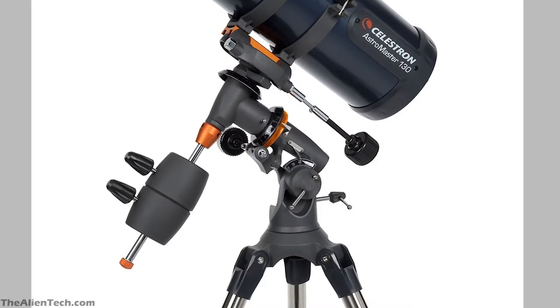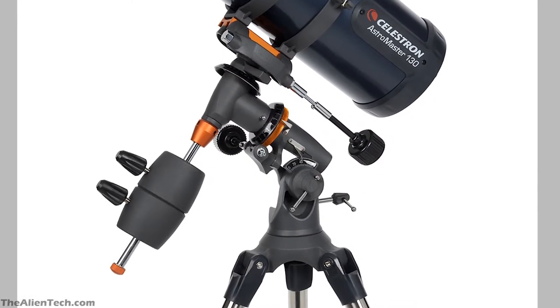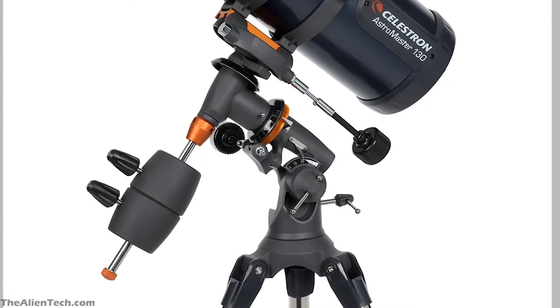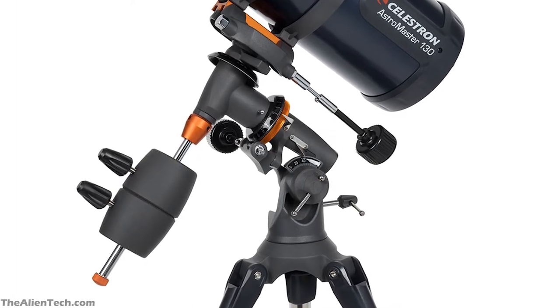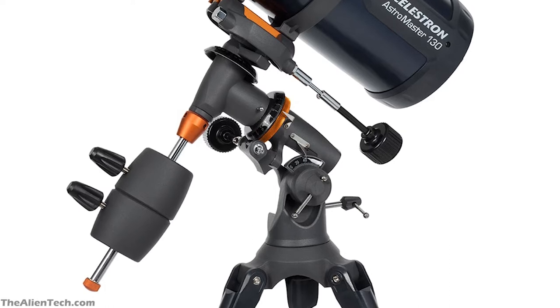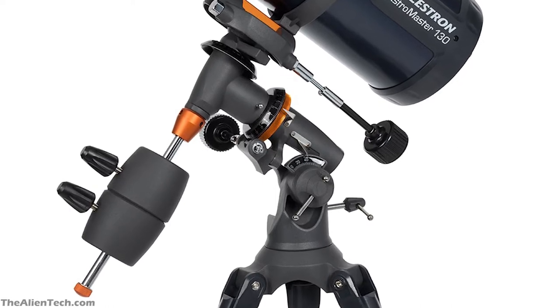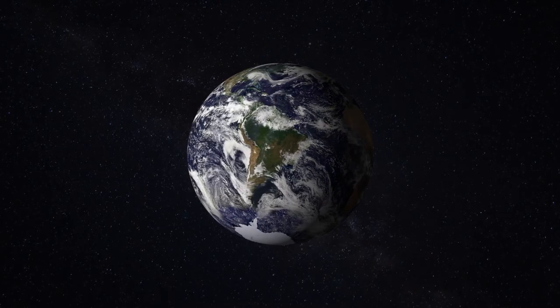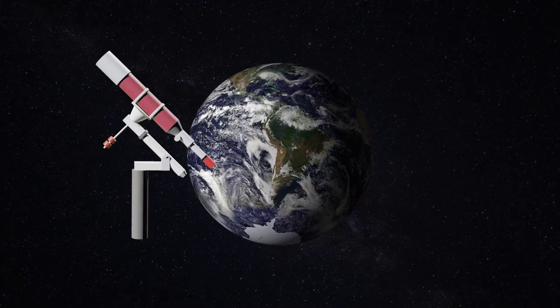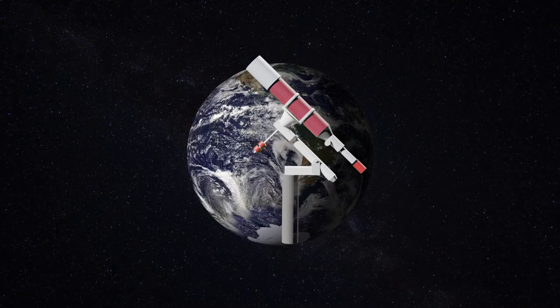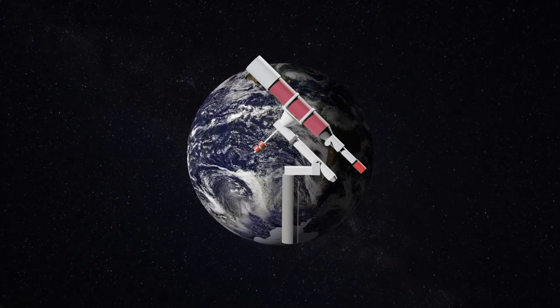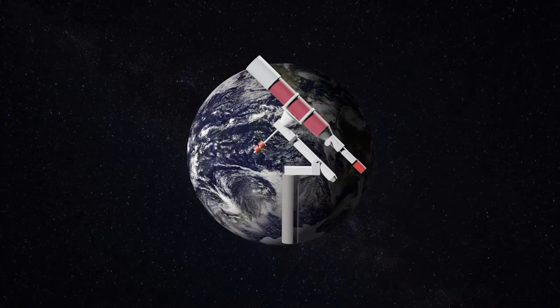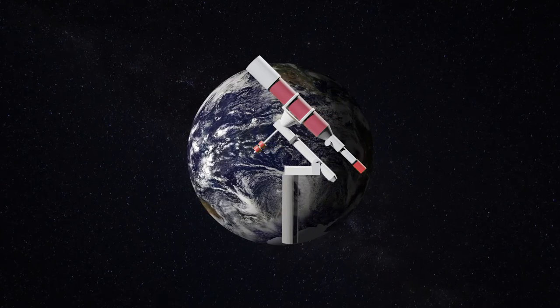Initially understanding equatorial mounts is difficult because they're slightly difficult to understand. It also gets very confusing for people because of the way things are described, but we will try to simplify that in this video. Today we will learn how exactly these equatorial mounts work, how exactly it matches with the earth's rotation and makes your job easier. Many of you might not understand it in the first attempt, so please re-watch the video if that's the case.